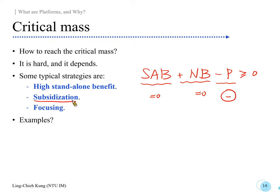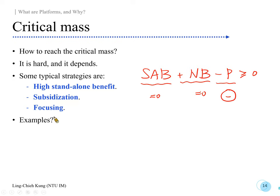Subsidization is a good strategy for growth because originally you have no users and you need to grow. One direct way is to give out money. It's good because it's very direct and useful at least in the short term. However, typically you don't want to do subsidization forever — it's a way to hopefully reach your critical mass, not a permanent strategy.